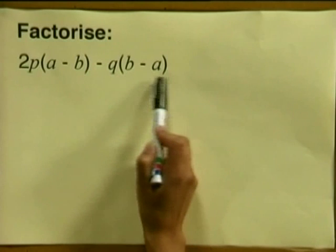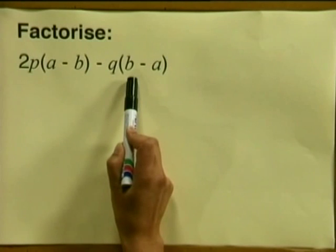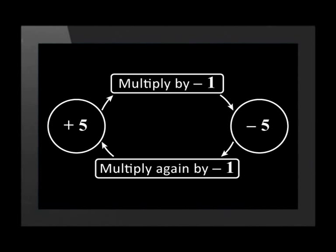I can make b minus a the same as a minus b if I multiply b minus a by minus 1. But I cannot just multiply once because this changes the value of our expression. I may multiply twice, because minus 1 multiplied by minus 1 gives us positive 1, and anything multiplied by positive 1 stays the same — it does not change. Can you see that the number does not change if we multiply it twice by minus 1?